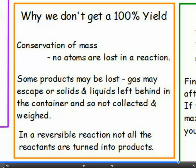You may not collect all of the product. Gases may escape through small gaps in the apparatus. And when solids or liquids are poured out to be weighed, some may be left inside the flask. Not all the reactant may react, and if the reaction is reversible, then some of the chemical in the container at the end will be reactants. This all means that you will get less than the maximum amount of product you could get.